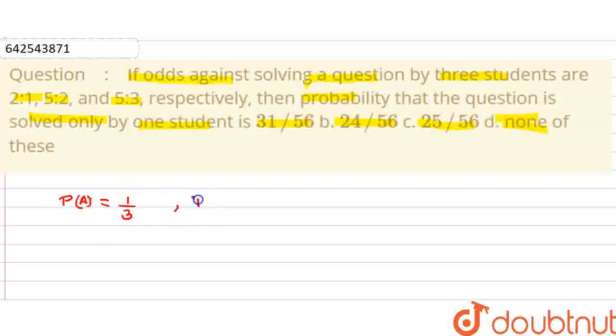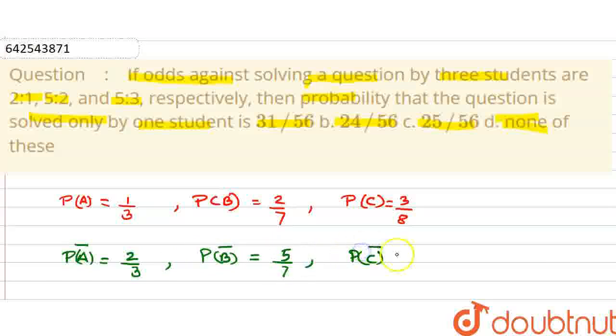For student B, it is 2 by 7, and for student C, it is 3 by 8. Then odds against solving a question by these three students will be given by P(A bar) is 2 by 3, P(B bar) is 5 by 7, and P(C bar) is 5 by 8.